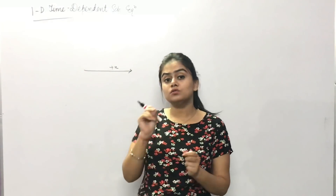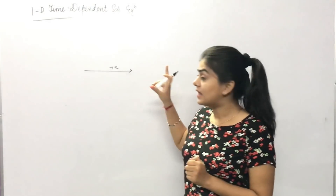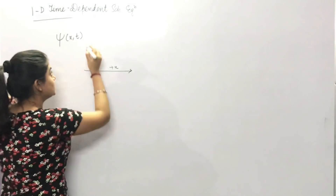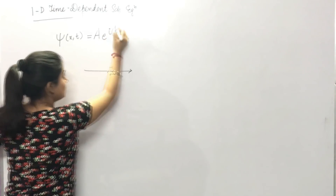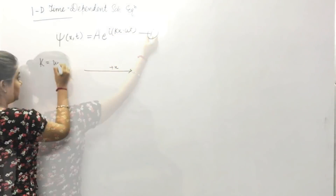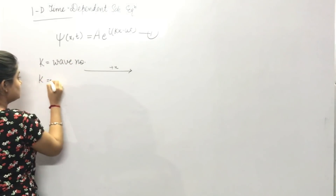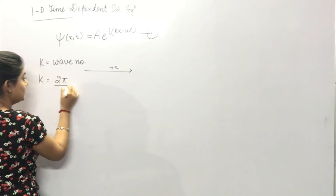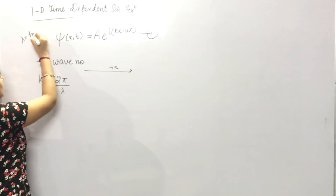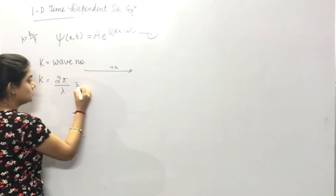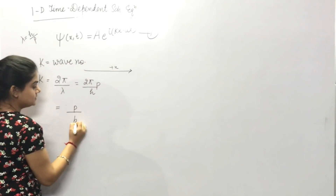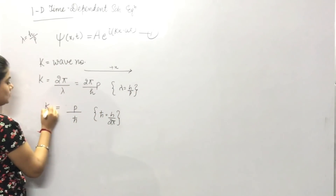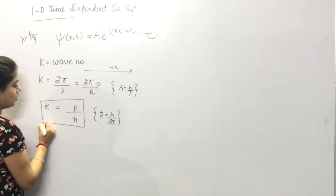Let's start with the 1D time-dependent Schrödinger equation. For that, let us write a wave function. We use the exponential solution: Psi equals A e to the power i(kx minus omega t). Here k is the wave number, with formula 2pi upon lambda. We use two formulas: k equals p upon h-bar, and angular frequency omega equals 2pi nu, where nu is the linear frequency.